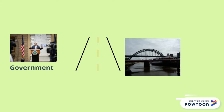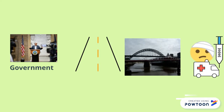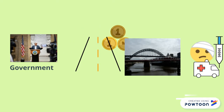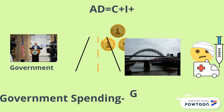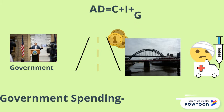The next sector is the government sector. The government has to spend in the economy as well because they need to make roads, bridges, and hospitals, so they need to buy materials. When the government is spending on the economy buying goods and services, it is known as government spending. The short form for government spending is G. Therefore, when we add the government sector, our AD will be equal to C plus I plus G.